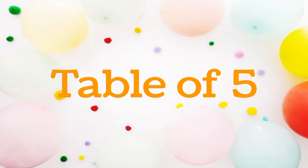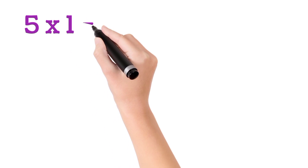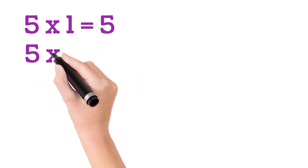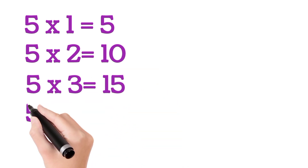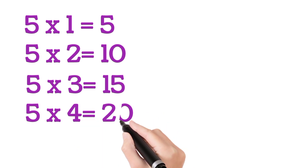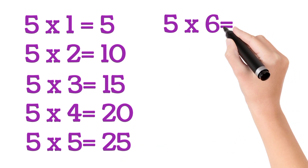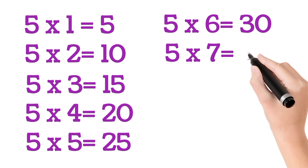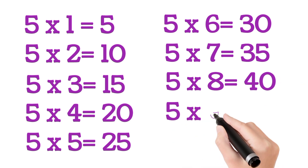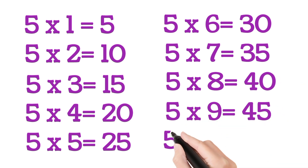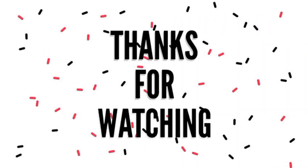Table of Five. Five One's a Five. Five Two's a Ten. Five Three's a Fifteen. Five Four's a Twenty. Five Five's a Twenty Five. Five Six's a Thirty. Five Seven's a Thirty Five. Five Eight's a Forty. Five Nine's a Forty Five. Five Ten's a Fifty.